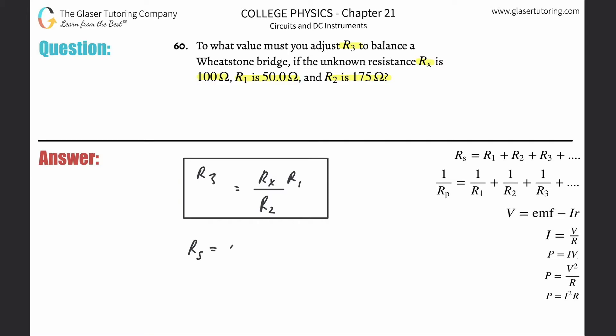So R sub x, they told us was 100. R sub one is 50. And then R sub two is 175.